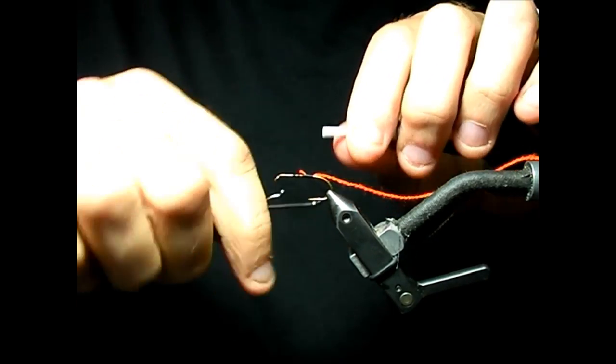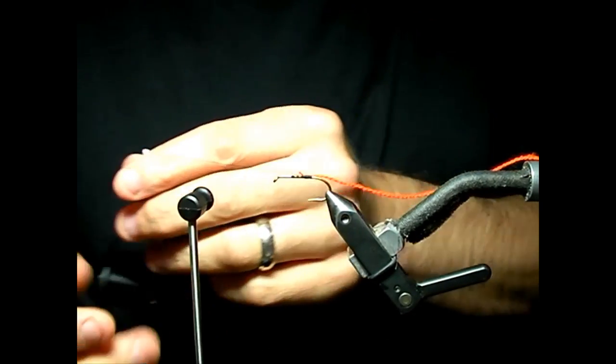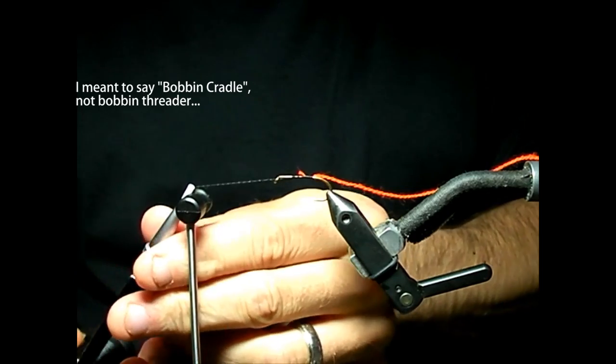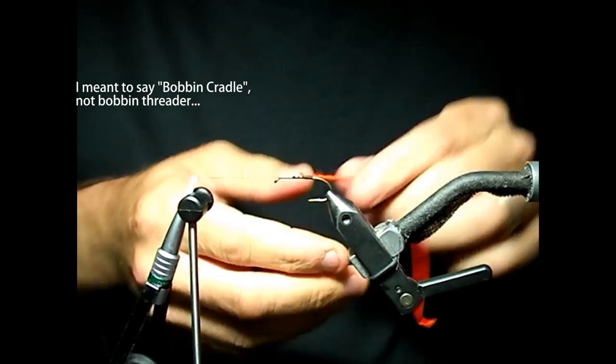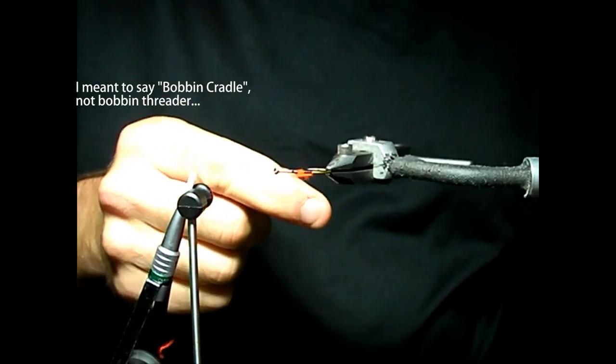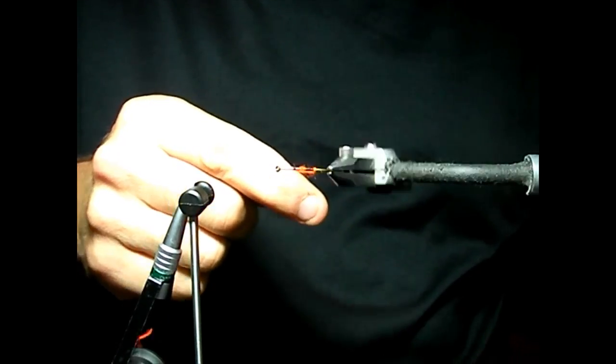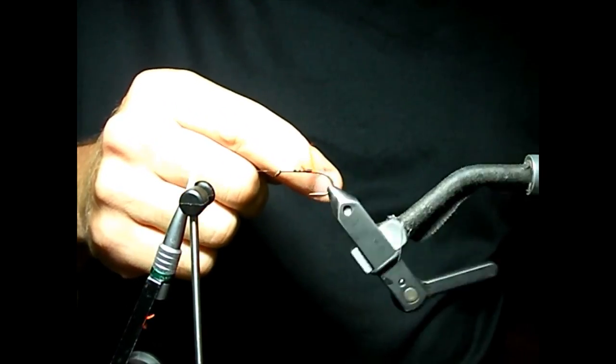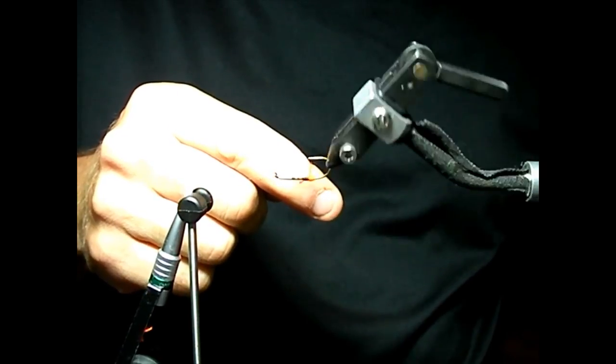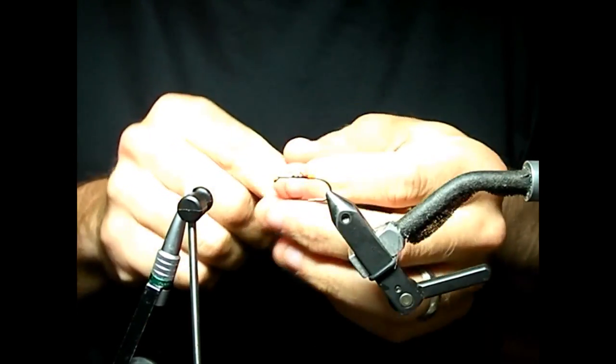Take your whip finish tool, put a couple wraps on that so you can swing in your bobbin threader. Then use the rotary function on your vise and do about three or four wraps forward.